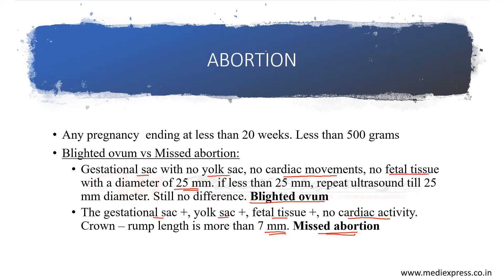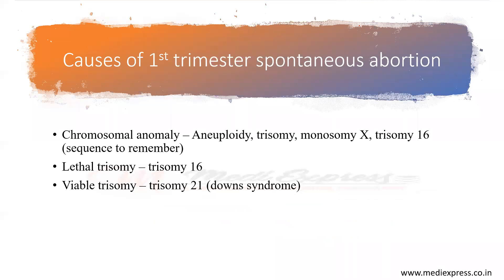Blighted ovum means only the gestational sac is present. The cause of first trimester spontaneous abortion — we need to remember a sequence. The most common cause is chromosomal anomaly. In chromosomal anomaly, the sequence is: aneuploidy is the most common, second is trisomy, third is monosomy X, then trisomy 16. The lethal trisomy is trisomy 16, and the viable trisomy is trisomy 21, which is Down syndrome.